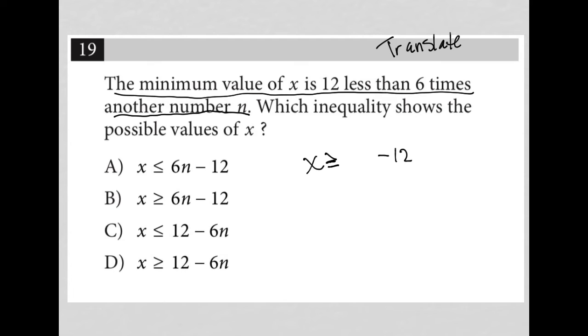Six times another number n, so 6n, right. This is 12 less than, starting out with 6n. And because X is greater than or equal to, that makes this all the minimum value of X.